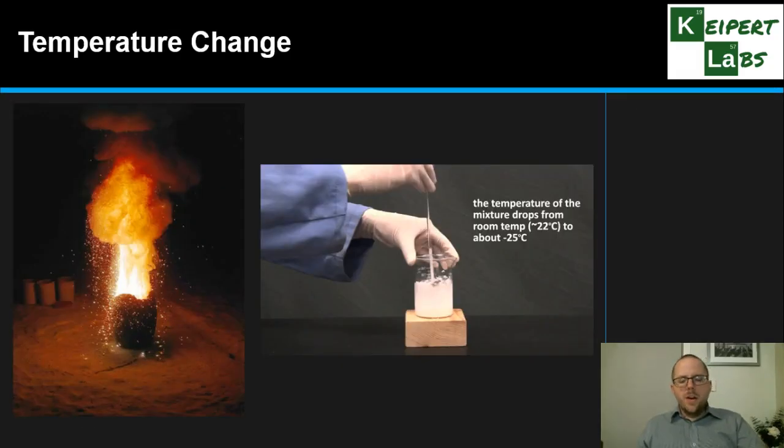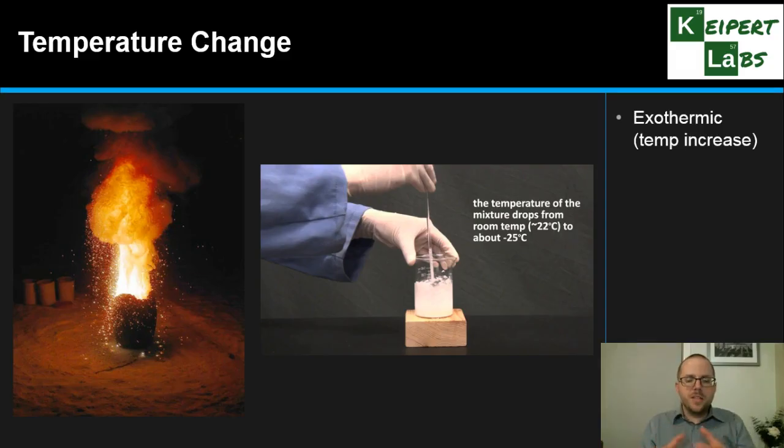The next one that we can notice is an effect on the temperature of the surroundings. Lots of chemical reactions will increase the temperature of their surroundings, will make things hotter. You can feel the test tube is hot to the touch. We call chemical reactions that give off this thermal energy exothermic - exo from the same root as exit, meaning out of, and thermic from thermal or heat. So that heat is out of the reaction and it increases the temperature of everything around it.